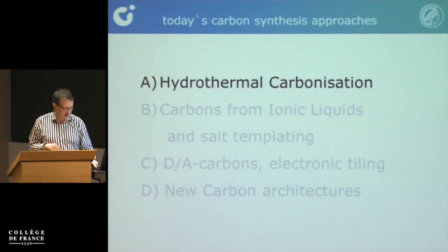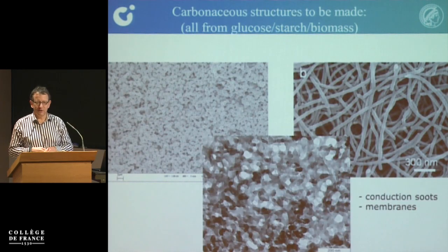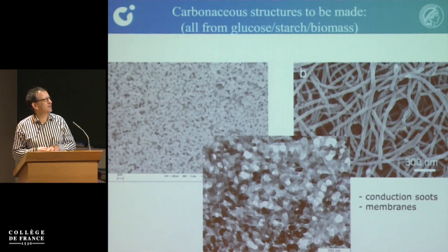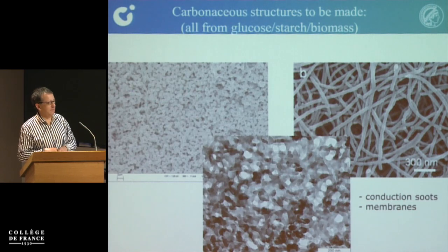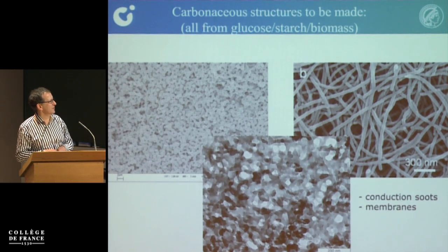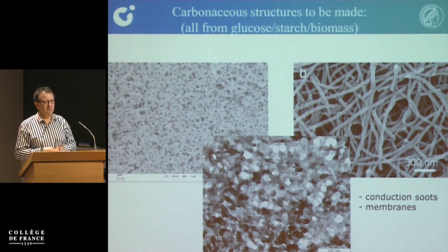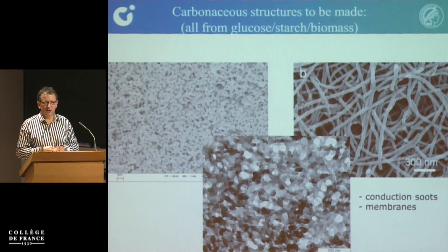First I will talk about hydrothermal carbonization, which is really something like sol-gel chemistry. It's old work — partly 100 years old. These are the structures we want to make, and this clearly shows you this is not layered graphene, not nanotubes. You see wonderful homogeneous spherical particles, rods as you might like them for fillers, for batteries, or even a sponge which is good for ion exchange, supercapacitors, or catalysis.